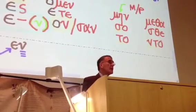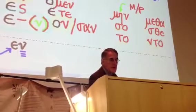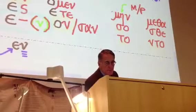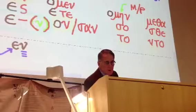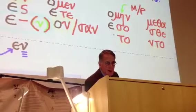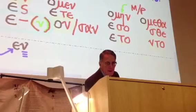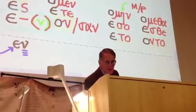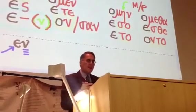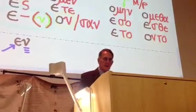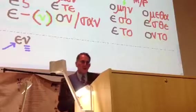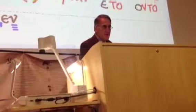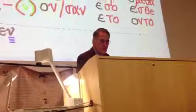These also will have a connecting vowel associated with them, and the rule is the same: omicron before mu or nu, and epsilon everywhere else. And again, I will expect that you'll be able to give me these endings — the main, saw, tau, metha, stha, un, tau. Now, some of you are pretty sharp, and you've seen something that makes you nervous — a couple things that make you nervous already.